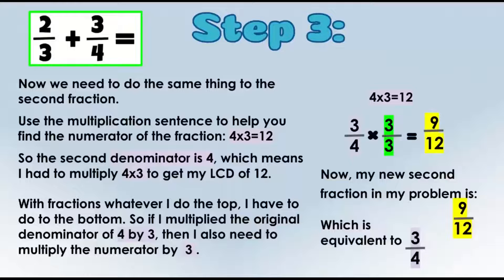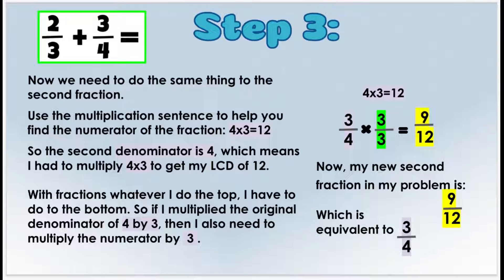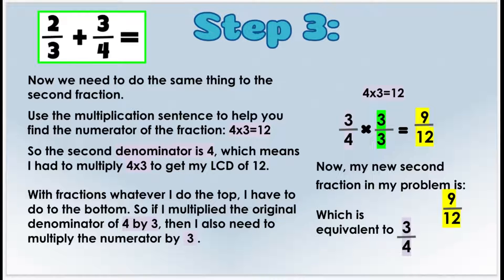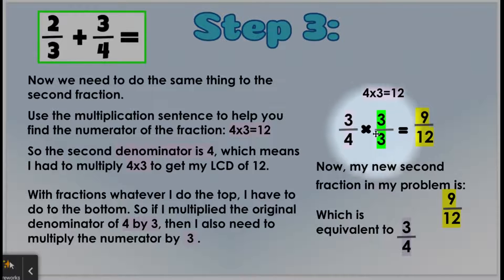In step three, lather, rinse, repeat with the second fraction. We're going to take three-fourths and use its multiplication sentence to find the numerator. The multiplication sentence for four was four times three equals 12. The second denominator started at four, which means we had to multiply by three to get the LCD of 12. Whatever I do to the bottom I have to do to the top, so if I multiply the denominator four by three, I also multiply the numerator three by three. Three-fourths times three over three equals nine-twelfths, and those two are equivalent.